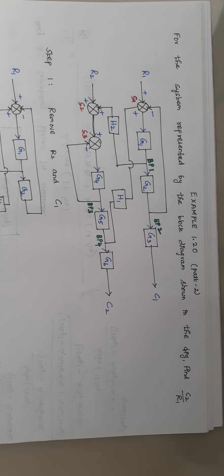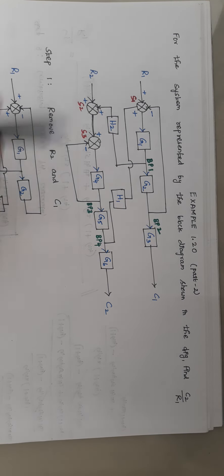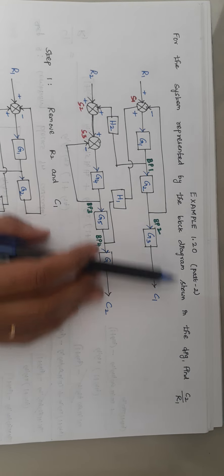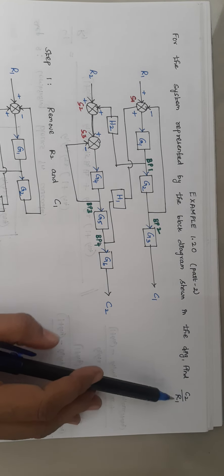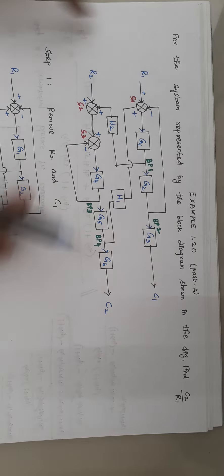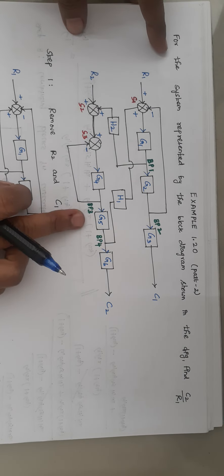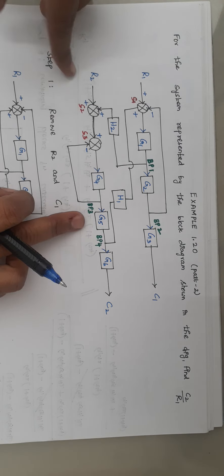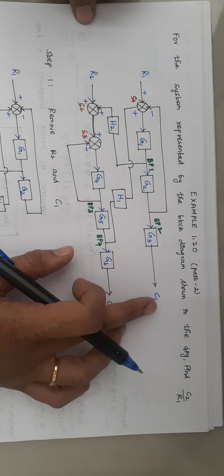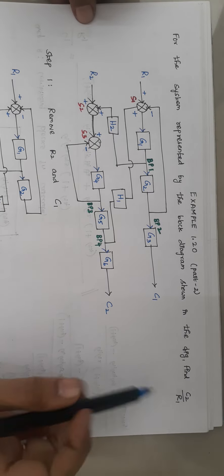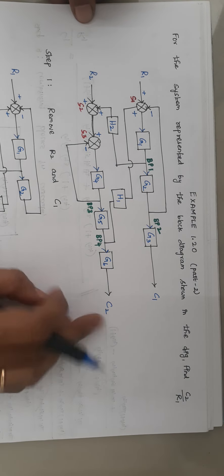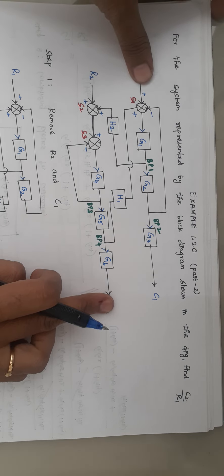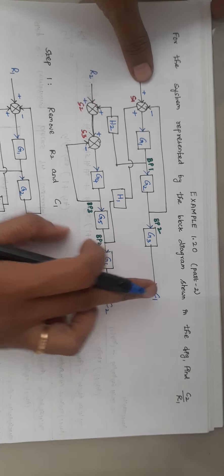Hello viewers, I am Kausalya. Today we are going to solve another block diagram reduction problem, and this problem has multiple inputs and multiple outputs. The problem is: for the system represented by the block diagram shown in figure, find C2 by R1. This block diagram has two inputs R1 and R2 and two outputs C1 and C2. Here we are asked to find only C2 by R1, so we have to consider C2 and R1 alone and remove C1 and R2.